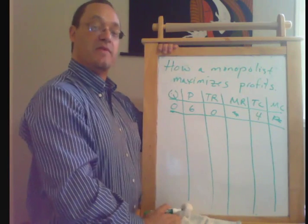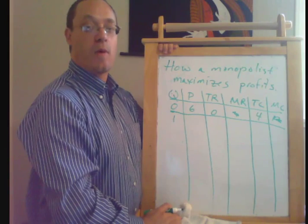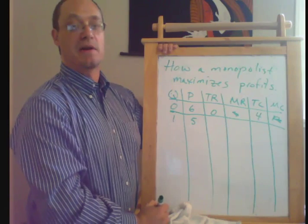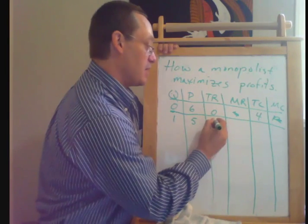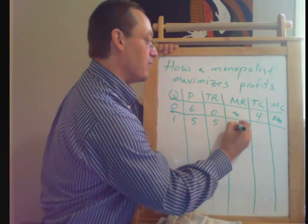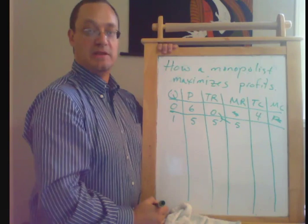If we have quantity of one, let's suppose that if we want to sell one unit, we have to cut our price to $5. That gives us a total revenue of five. Marginal revenue is $5.